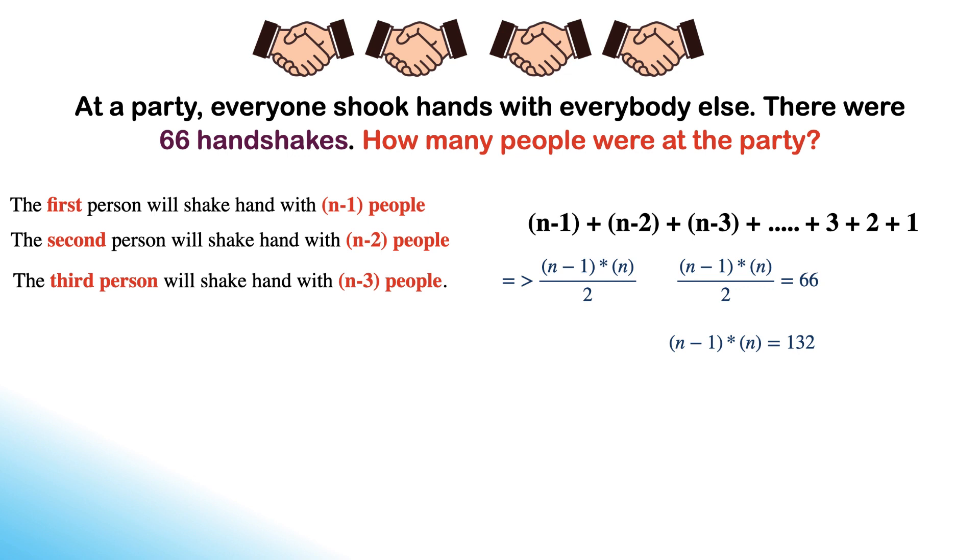After simplification, it becomes n times n minus 1 equals 132. Further simplification results in n squared minus n minus 132, which is equal to 0.